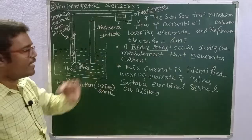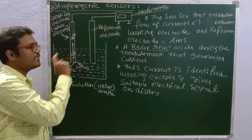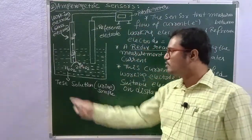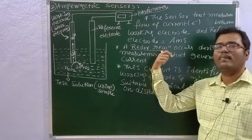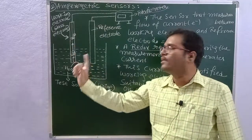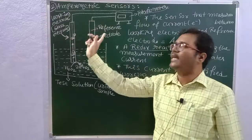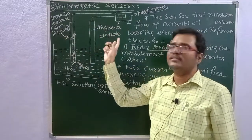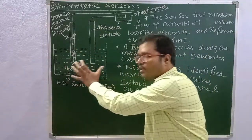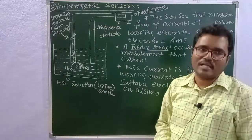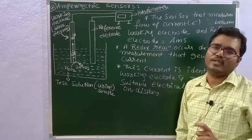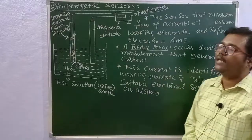An amperometric sensor measures the current flowing between the working electrode and reference electrode. In the test solution, a redox reaction takes place — oxidation and reduction. During oxidation, electrons are generated and transferred between the anode and cathode, i.e., between the working electrode and the reference electrode. This current measurement allows us to determine the chemical quantity, which is then displayed on the potentiometer.